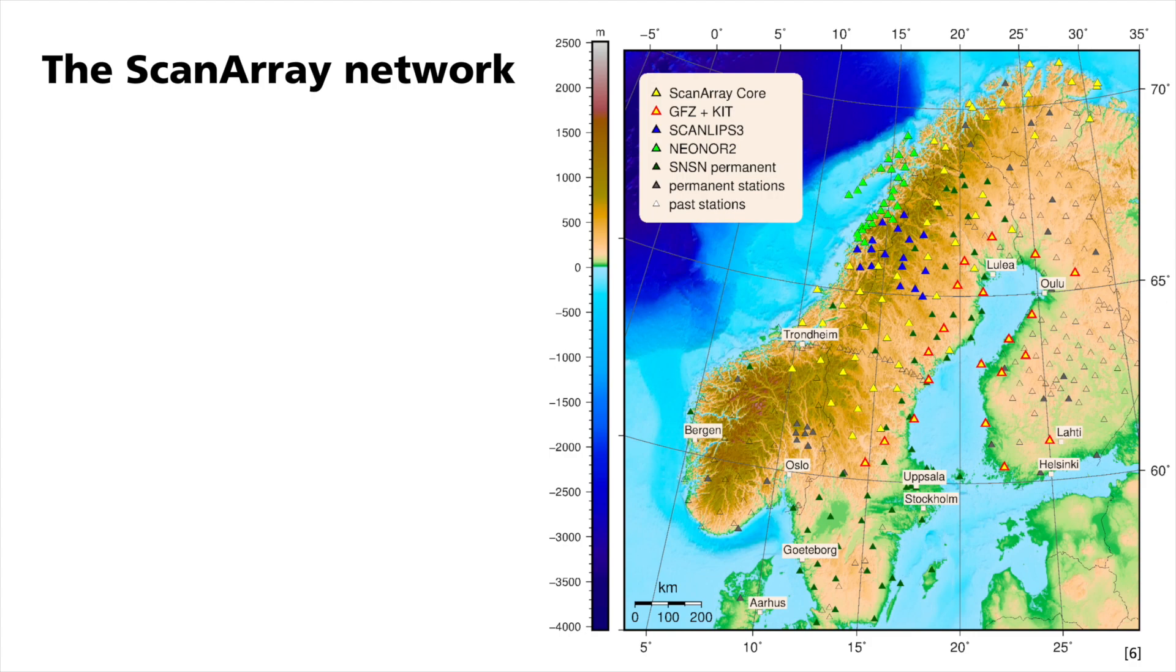This may help us to receive new constraints on the tectonic evolution of Fennoscandia. However, the recorded data also allows us to study much deeper structures far away from the network like the D double prime just atop the core-mantle boundary. The D double prime layer is meant to be anisotropic. What are the reasons for anisotropy in general? Within the Earth, anisotropy is mainly caused by two primary sources.